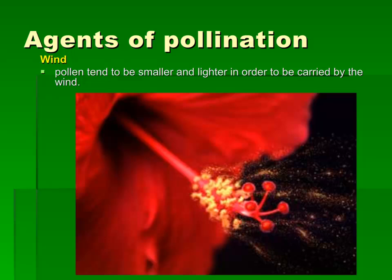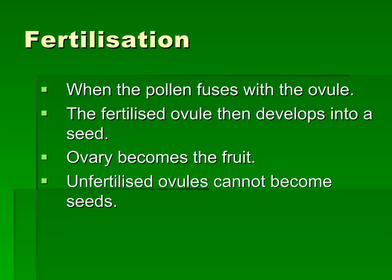I hope you understood what pollination means. Now let's move on to fertilization. After the process of pollination, fertilization happens. Fertilization is when the pollen fuses with the ovule. The fertilized ovule then develops into a seed, and the ovary becomes the fruit.